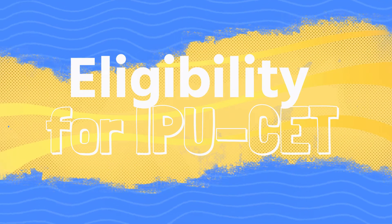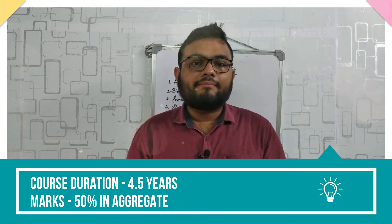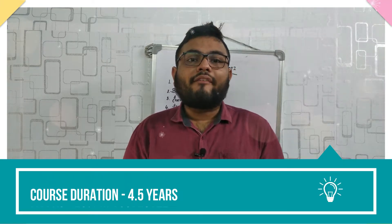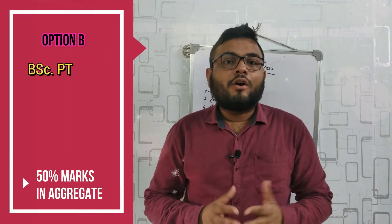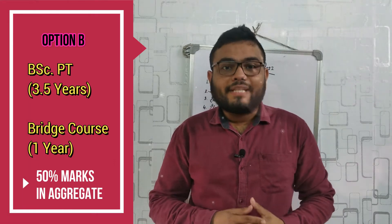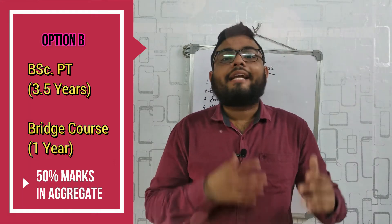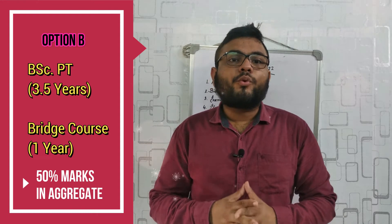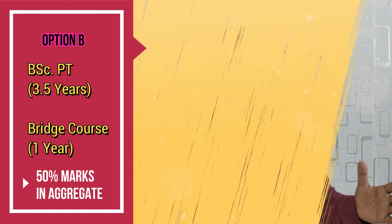The eligibility to sit for this entrance test: Option A — you have a bachelor's degree in physiotherapy which constitutes 4 years of study and 6 months of compulsory internship, and you need to score 50% marks in aggregate. Option B — you have a DSCP degree of 3 and a half years and have also done a bridge course of 1 year. In both cases you need to score 50% marks in aggregate.